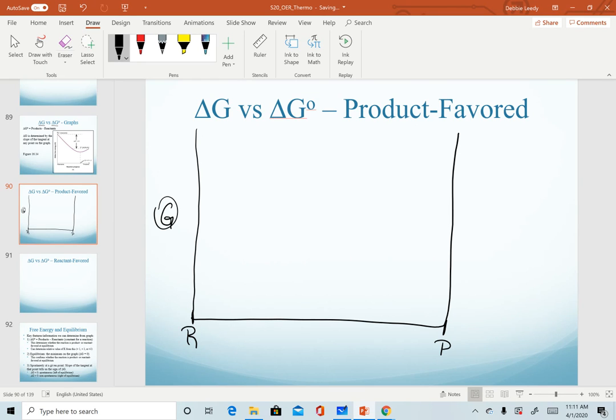And our y-axis is a value of G. Now, one important thing to recognize is the value of G is not measurable. So it's not like we can go into lab, collect data, and duplicate this graph. This graph is more useful after we know some information about a reaction and help us interpret what's going on with that reaction.